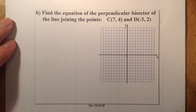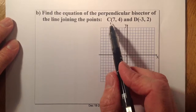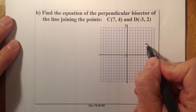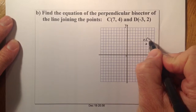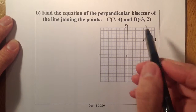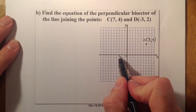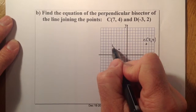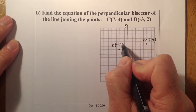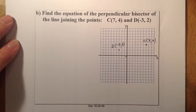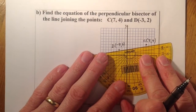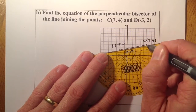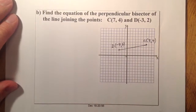I'll give you the solution to question 2 as well. I'm going to plot point C at (7, 4) — so 7, 4 will be here. And point D is (minus 3, 2) — so that'll be to there. That's point D at (-3, 2). Usually you don't need to draw it, but a diagram does help sometimes with this type of work.